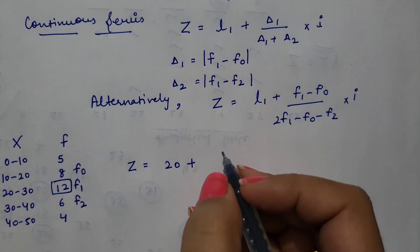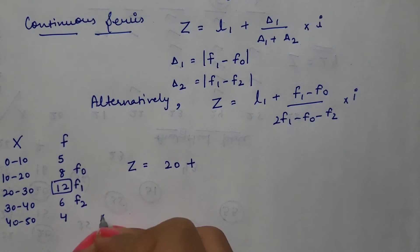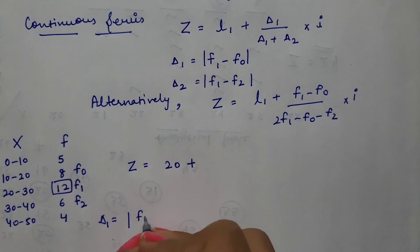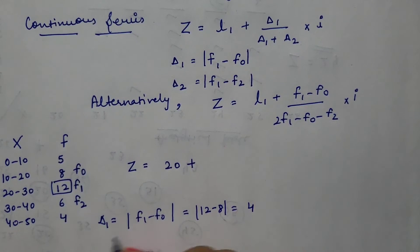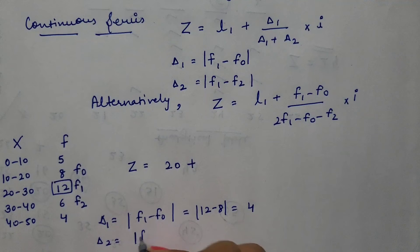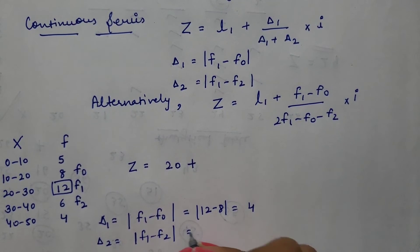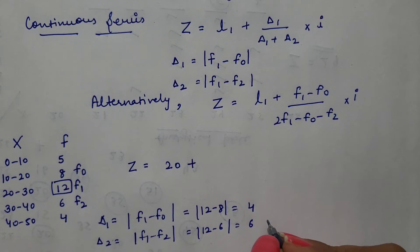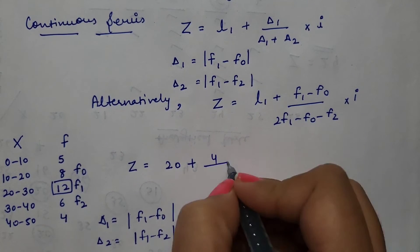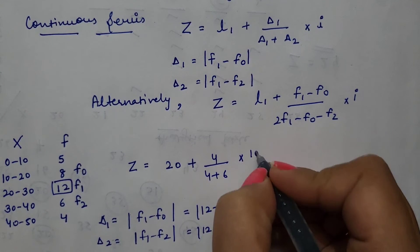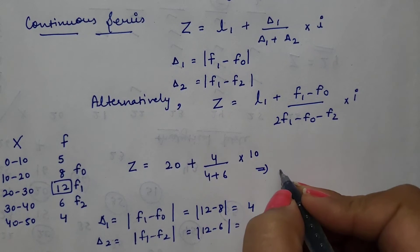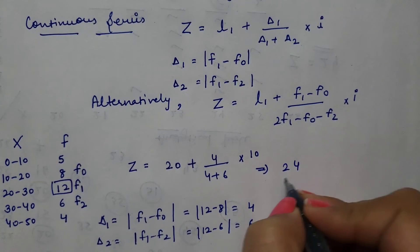Delta 1 means F1 minus F0, which means 12 minus 8 equals 4. And delta 2, F1 minus F2, which means 12 minus 6, that is 6. So, 20 plus delta 1, which is 4, divided by 4 plus 6, multiplied by interval of class, that is 10. Answer is 24.